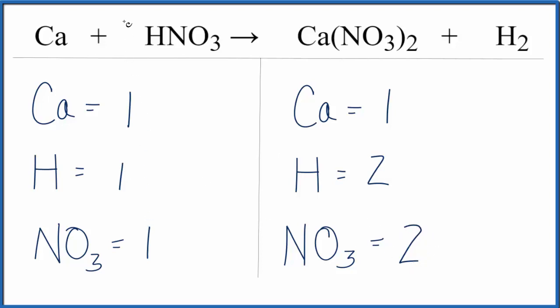So all I need to do is put a coefficient of 2 in front of the nitric acid, the HNO3, and this 2 applies to everything. So I have 1 hydrogen times the 2. That will give me 2 hydrogens. Those are balanced. And then I have 1 nitrate times the 2. That gives me 2 of these NO3s, and those are balanced.